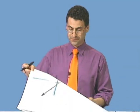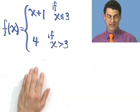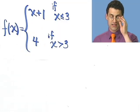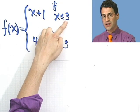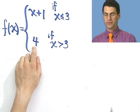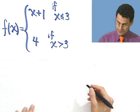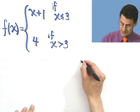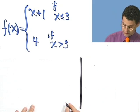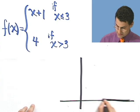This one, f of x equals one of two things. It either equals x plus 1 if x is less than or equal to 3 or it equals the constant number 4 if x is bigger than 3. So how would I graph this? Well, let's think about this for a second.